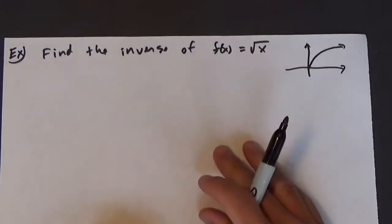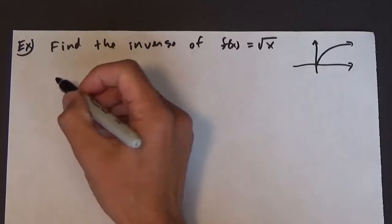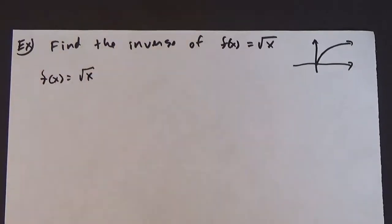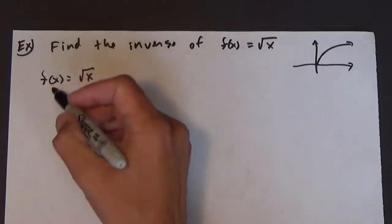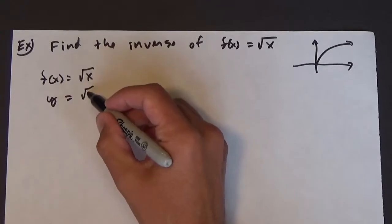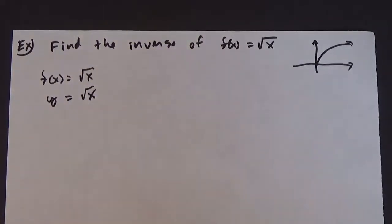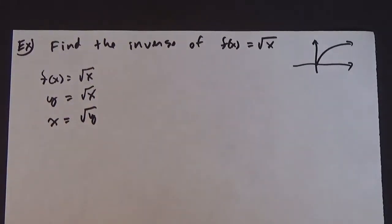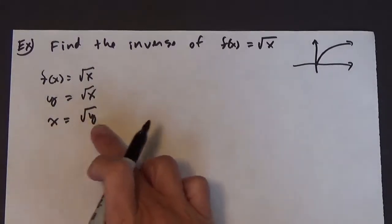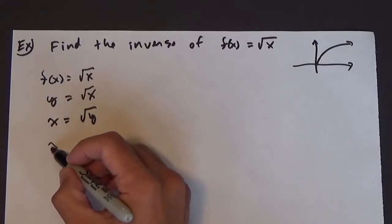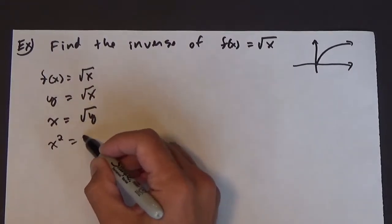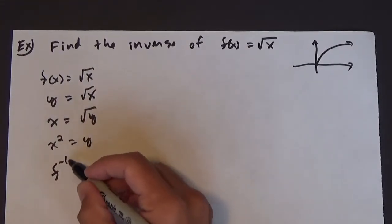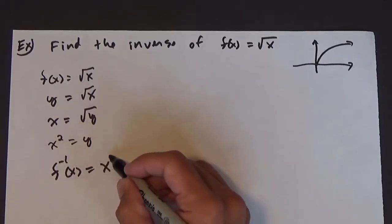Now that we know it has an inverse, let's find it. f(x) = √x. We replace f(x) with y, so y = √x. We interchange x and y, so x = √y. Then we square both sides and get x² = y. We replace y with f inverse, so f⁻¹(x) = x².